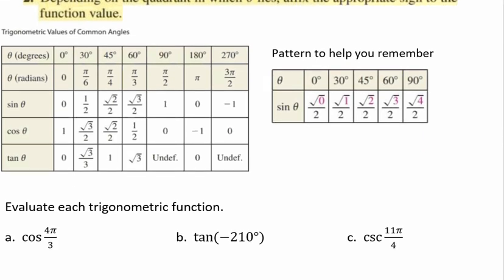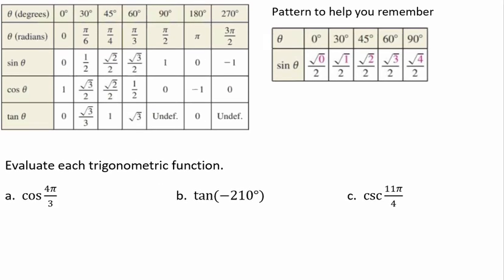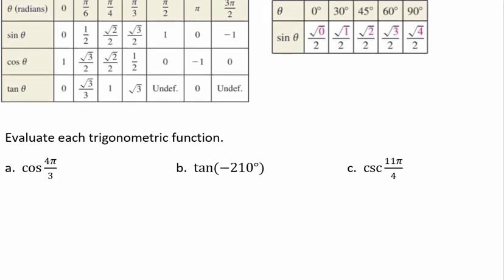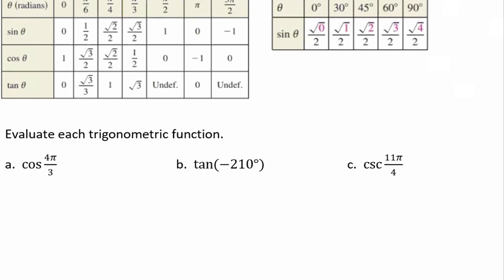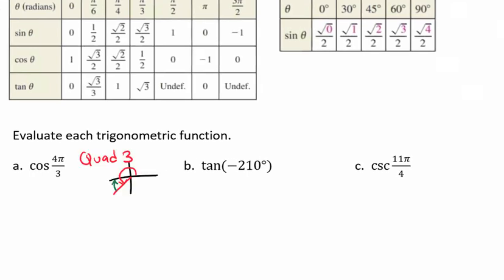We're going to be evaluating each trig function in this example. For example a, we have the cosine of 4π over 3. The first thing that we want to do here is draw that angle. Here we have 4π over 3 and we want to find that reference angle.